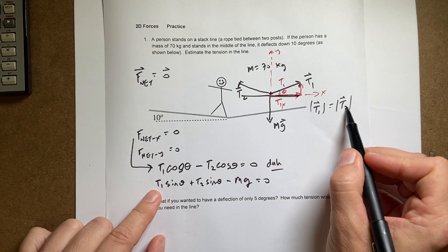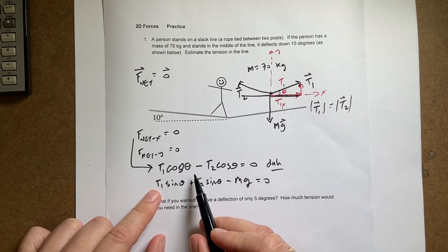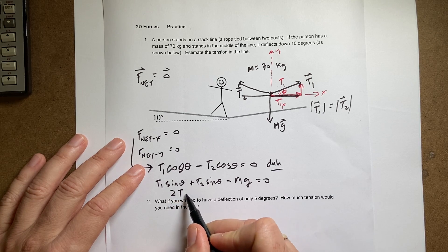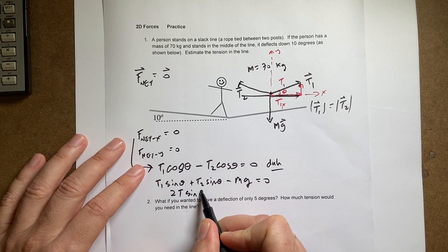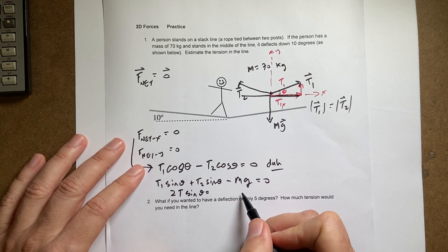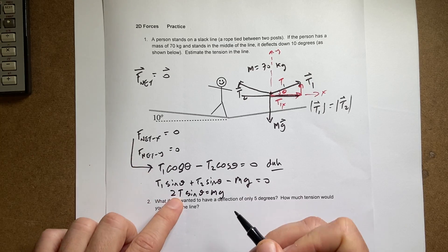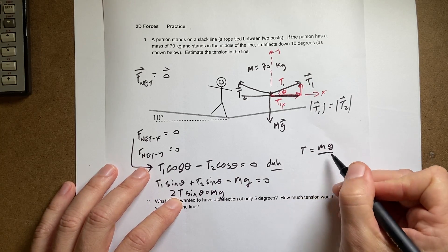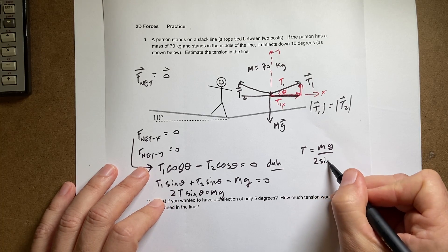Since T1 magnitude is equal to T2 magnitude, these two values are the same. And I can write this as 2, let's call it T, sine theta equals, and then I add mg to the other side, mg. Now I want to solve for T. I get T equals mg over 2 sine theta.